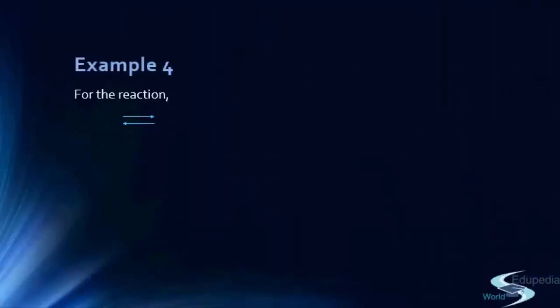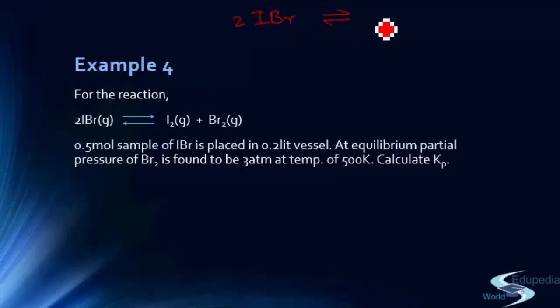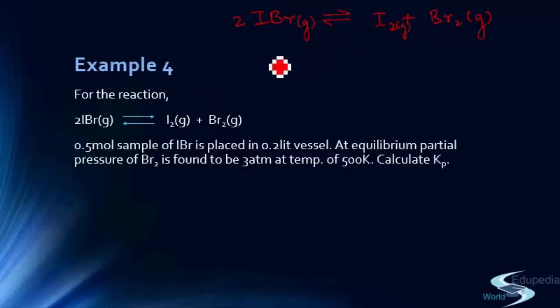In the second example, the reaction is 2 IBr → I2 + Br2. A 0.5-mole sample is taken in a 0.2-liter vessel (constant volume). At equilibrium, the partial pressure of bromine is given. This time we will use the pressure-ratio method instead of mole fractions.